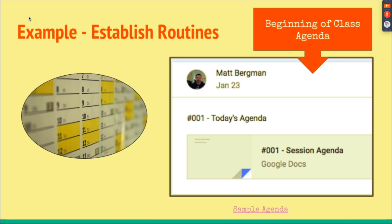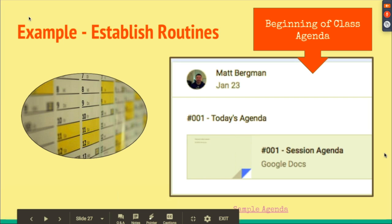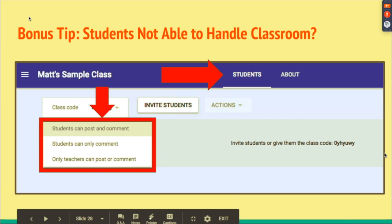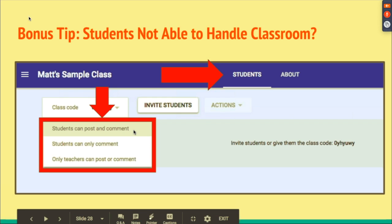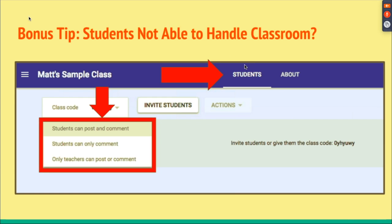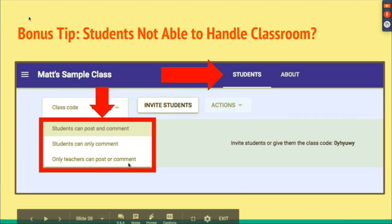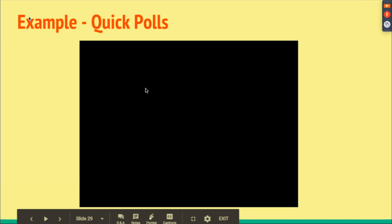Consider establishing routines at the very beginning of class. Maybe have a beginning-of-class agenda that students can click on to see what you're doing that day. If students are posting things they shouldn't, you can control this under the People tab — you can set it so students can post and comment, students can only comment, or only teachers can post and comment.